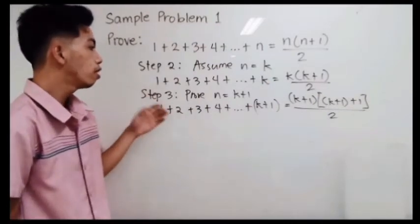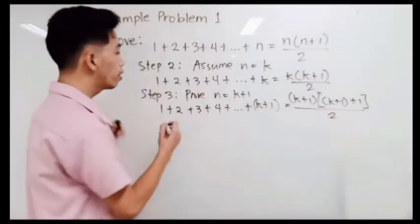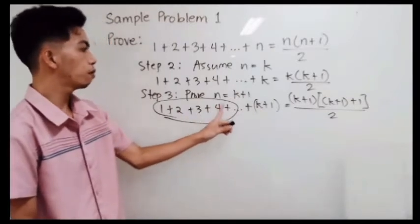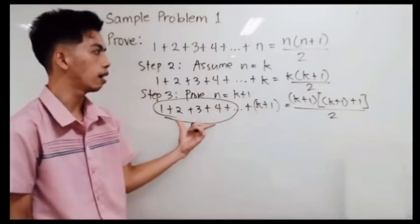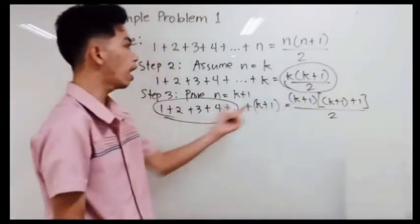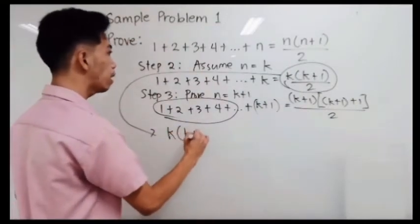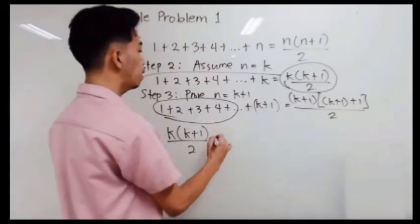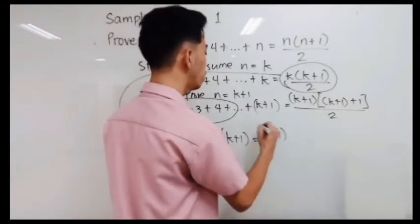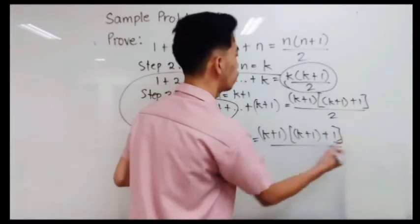Now we are going to prove that this statement is true for n equals k plus 1. To do that, we substitute the value of 1 plus 2 plus 3 plus 4 plus all the way to k, whose value is k times k plus 1 all over 2.